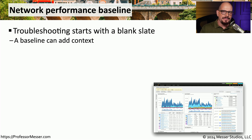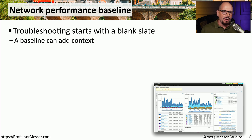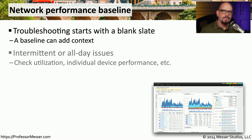Once we begin gathering all of this data from many different sources, we can start building a picture of what a normal day on the network looks like. We refer to this as a network performance baseline, which is a very useful set of statistics, especially when troubleshooting. If you're trying to determine if a large amount of utilization is normal, you simply look at your baseline to know the normal utilization during a standard workday, compare that to the current value, and determine if it's better or worse. We can also drill down into these baselines to see what normal performance might be for an individual device, giving a very detailed view across many devices by compiling this data into a central baseline.